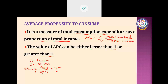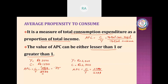Now let me prove that APC is greater than 1. If income is 2,000 and consumption expenditure is 2,500 — meaning consumption is higher than income — APC is C by Y, so 2,500 divided by 2,000 equals 5 by 4, which is 1.25. This proves that APC can be greater than 1. Average propensity to consume is the measure of total consumption expenditure as a proportion of total income.